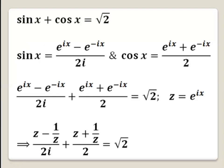Let's begin with the first method. We have sine x plus cosine x equals square root of 2. We will substitute sine x by (e^(ix) minus e^(-ix)) over 2i, and substitute cosine x by (e^(ix) plus e^(-ix)) over 2. Now the equation becomes those substituted forms, and we let e^(ix) equal z.